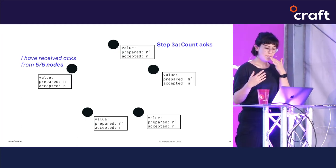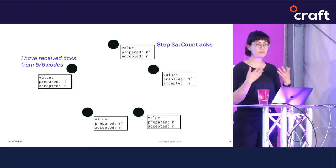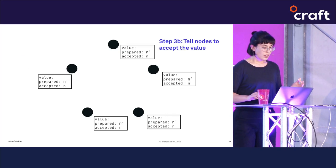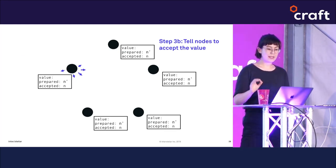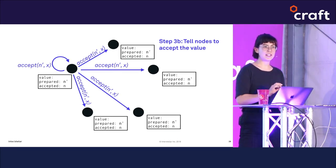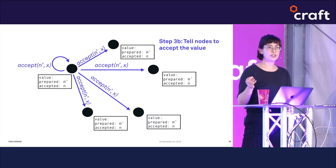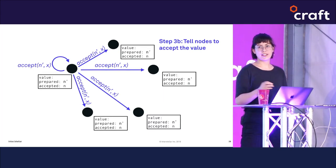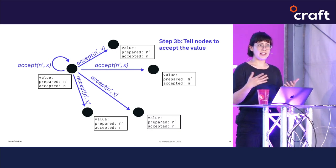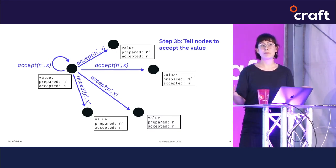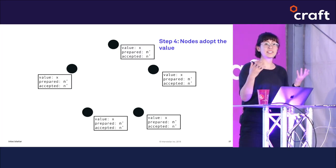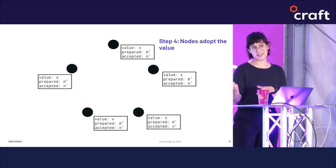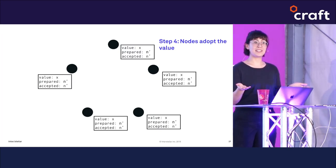If it's received acknowledgments from a majority of nodes — a quorum — it can proceed with the ballot. The proposing node then sends out another message: "accept ballot n-prime," which is a command telling other nodes they must accept this ballot. This message also includes the value the nodes should adopt, in this case X. Once a node receives the accept command, it updates its value to X unless it has already received a new ballot with a higher number.